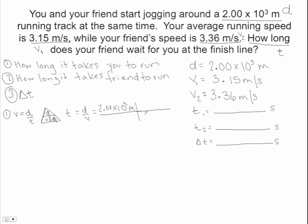And I'm going to put my velocity on the bottom. Meters on the top. Seconds. Or meters on the bottom. Seconds on the top. Sorry. I'm going to cross out these meters. Cross out these meters. And I'm going to get an answer. I got 634.92 seconds. So that's the T one. 634.92.